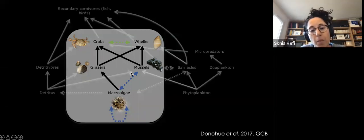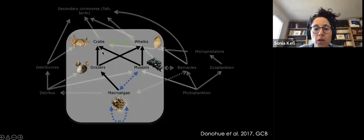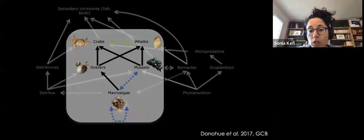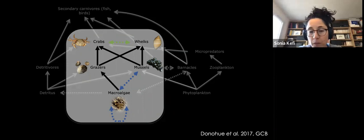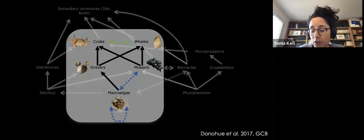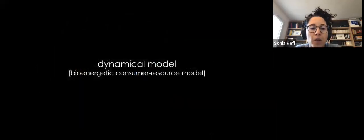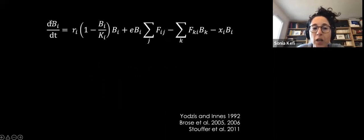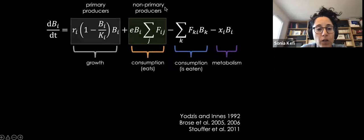This means mussels are proportionally more eaten when two predators are present than when each is alone. To explore the discrepancy between observations and model predictions, we investigated the role of these non-feeding interactions in a dynamical model — work of Alexandre Génin, a former PhD student in my group now doing a postdoc in Chile at Las Cruces with Sergio Navarrete. We used a classical bioenergetic consumer-resource model where the biomass B of each species i follows an ordinary differential equation with a growth term, a feeding term, and a loss term due to metabolism.